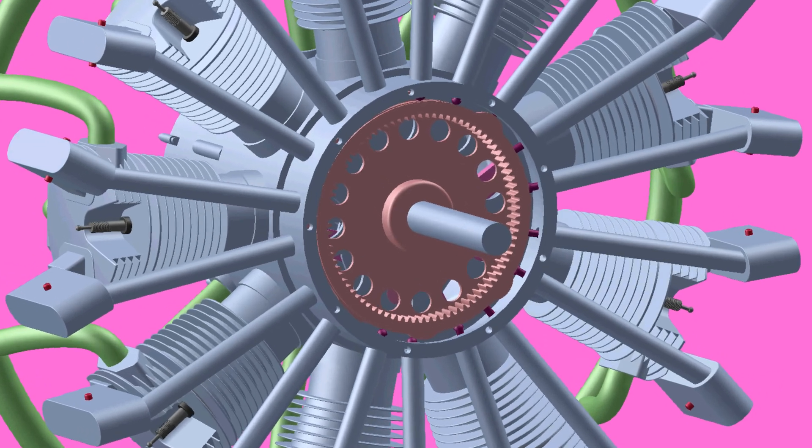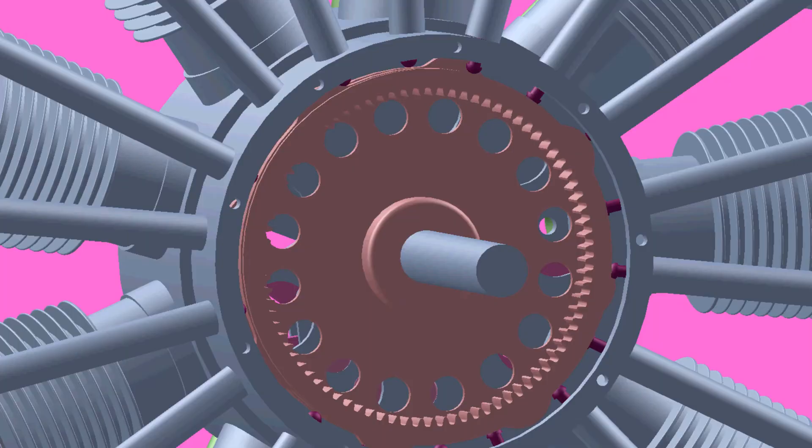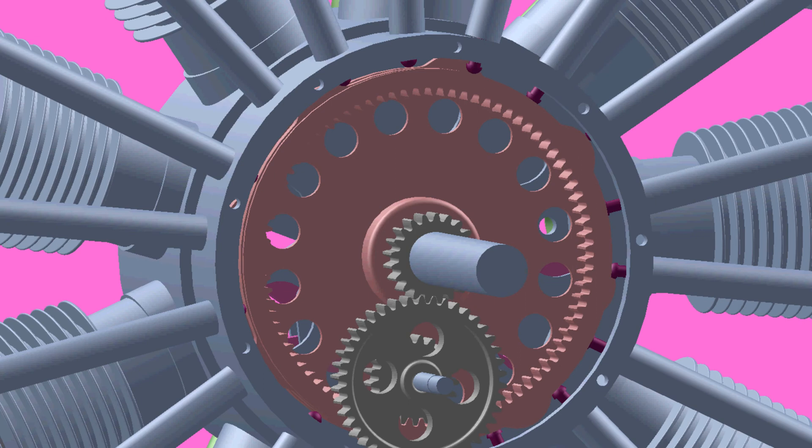So, the cam shaft should rotate 1/8th speed of crankshaft. Gear arrangement is used to make the cam ring to rotate slower than the crankshaft.